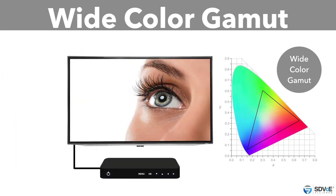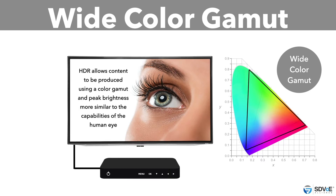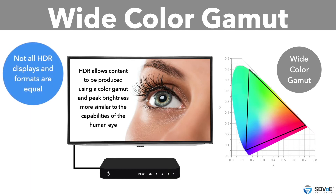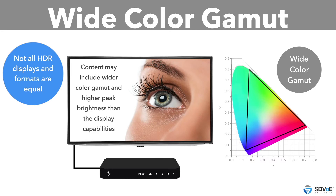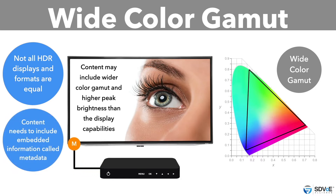HDR has dramatically changed this, because content is being produced using a color gamut and peak brightness which is more similar to the capabilities of the human eye. However, not all HDR displays and formats are created equally, so content may include a wider color gamut and higher peak brightness than the display's capabilities. Metadata is the term used for embedded information about the content, which helps a lower-brightness display understand how to successfully display a high peak brightness image.